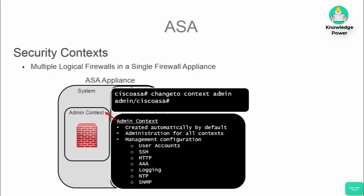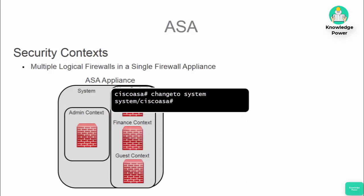The admin context can be accessed by entering the command 'changeto context admin'. The admin context configuration is used for management features like AAA, SNMP, and logging. To switch back to system mode, you can use the command 'changeto system', and that will take you back to the base configuration prompt.